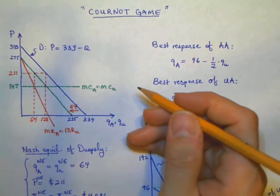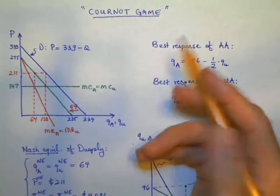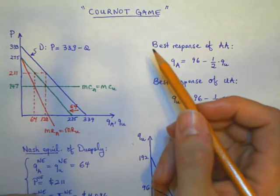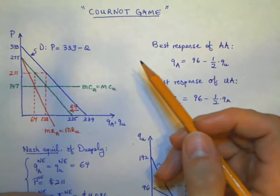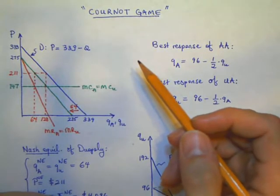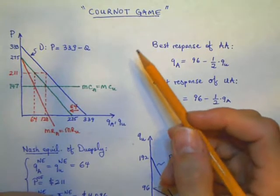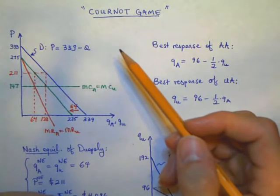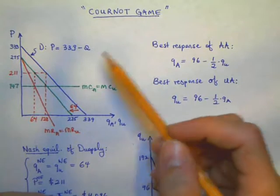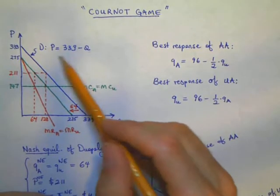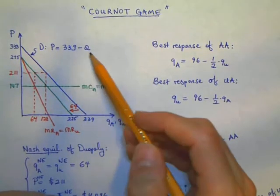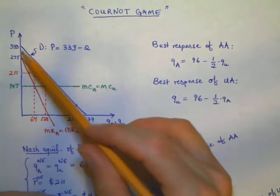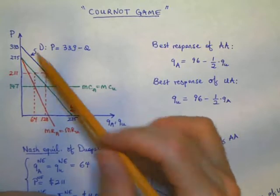Hello, we continue our solution of the Cournot game. As you might remember, last time we discussed a game where we have two airline companies, American Airlines and United Airlines, competing for the business of flying passengers on the route between Chicago and Los Angeles. The total market demand is given by P = 339 - Q, the price is determined by that, and this is the equation for our demand curve. We were able to draw our demand curve.